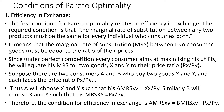First of all, we have efficiency in exchange. The first condition of Pareto optimality relates to the efficiency of exchange. The required condition is that the marginal rate of substitution between any two products must be the same for every individual who consumes both. So we have two consumers, two goods, and we look into the marginal rate of substitution between the two commodities for both individuals. The marginal rate of substitution between the two consumer goods must be equal to the ratio of their prices.